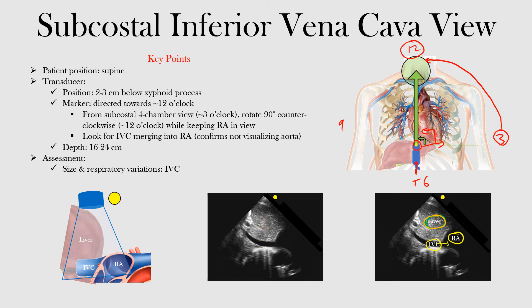Now look at this image on the left. It may initially look a little off, but envision the transducer looking straight down the patient's belly. The transducer is seeing the inferior vena cava as it goes into the right atrium, almost in a perpendicular position looking down, identifying the IVC going into the right atrium.